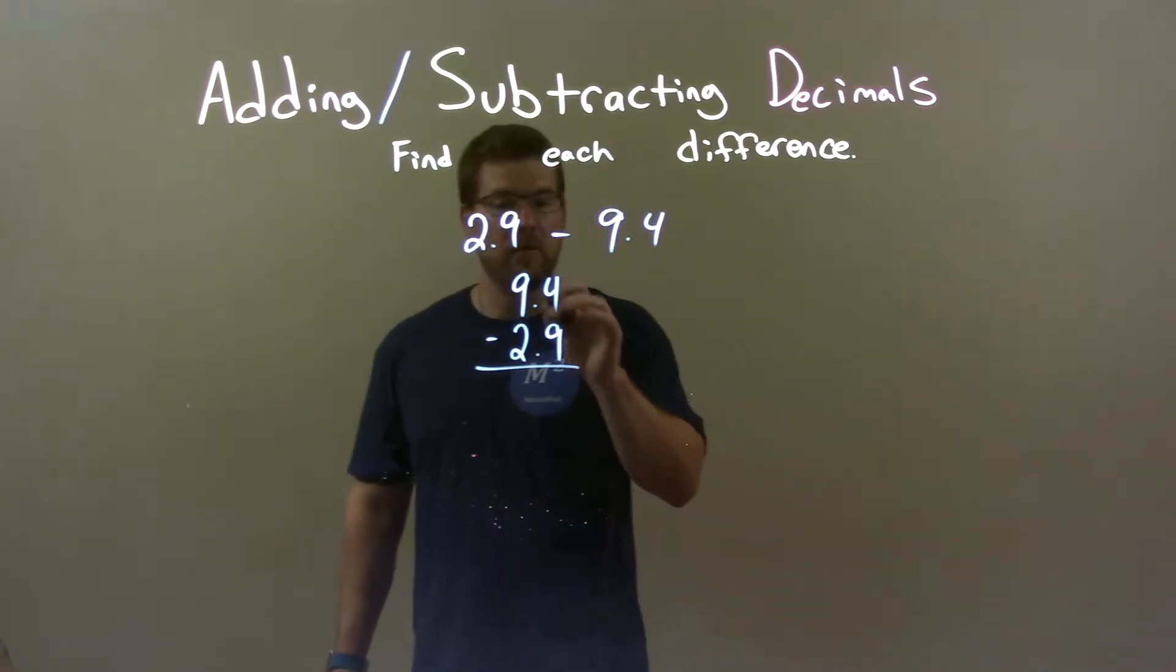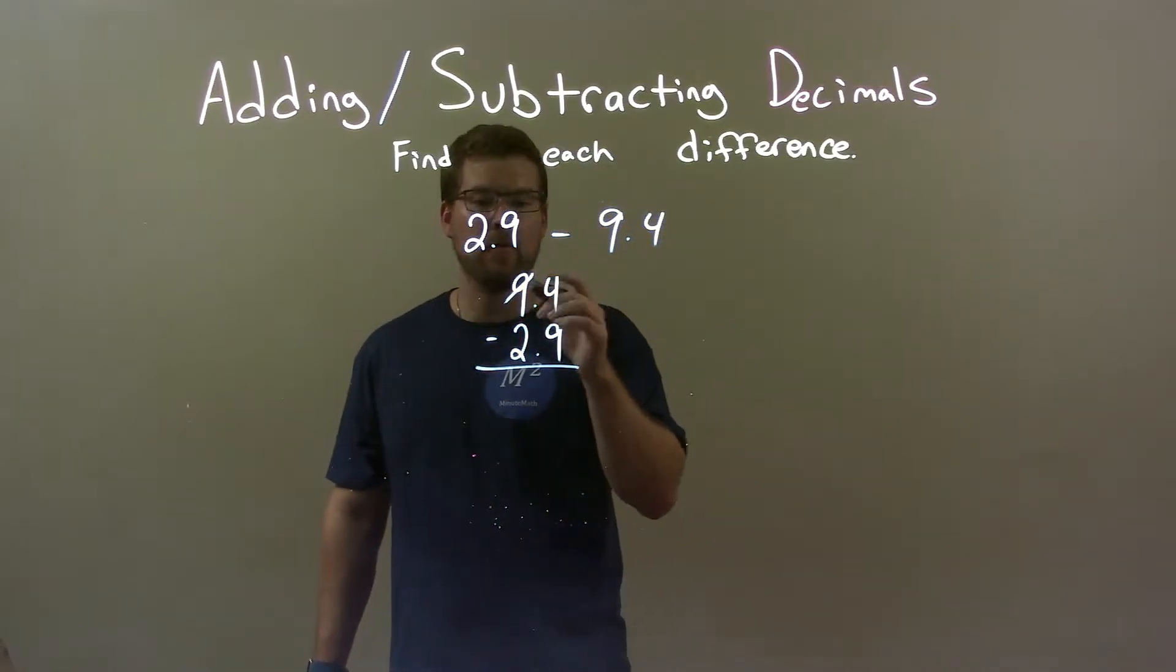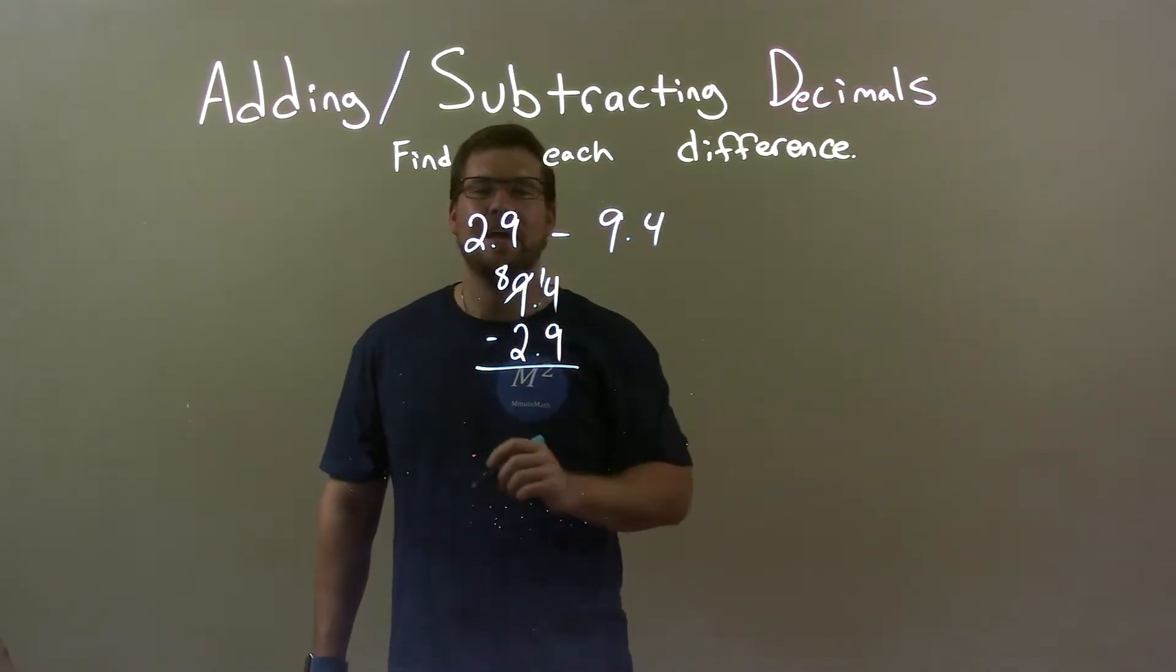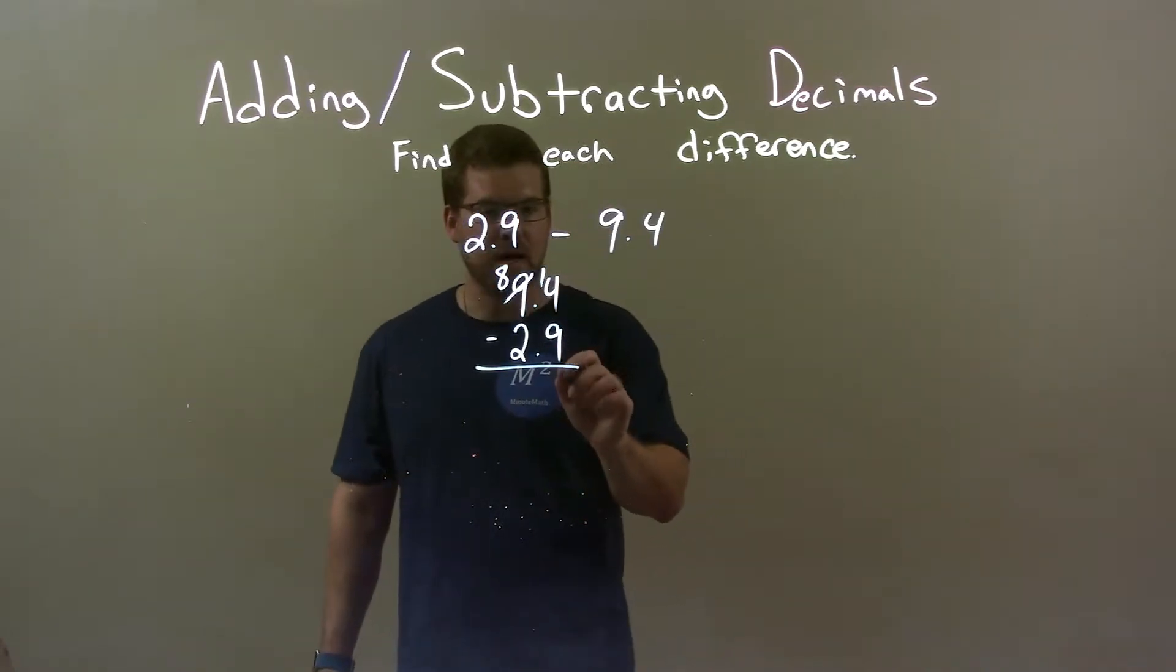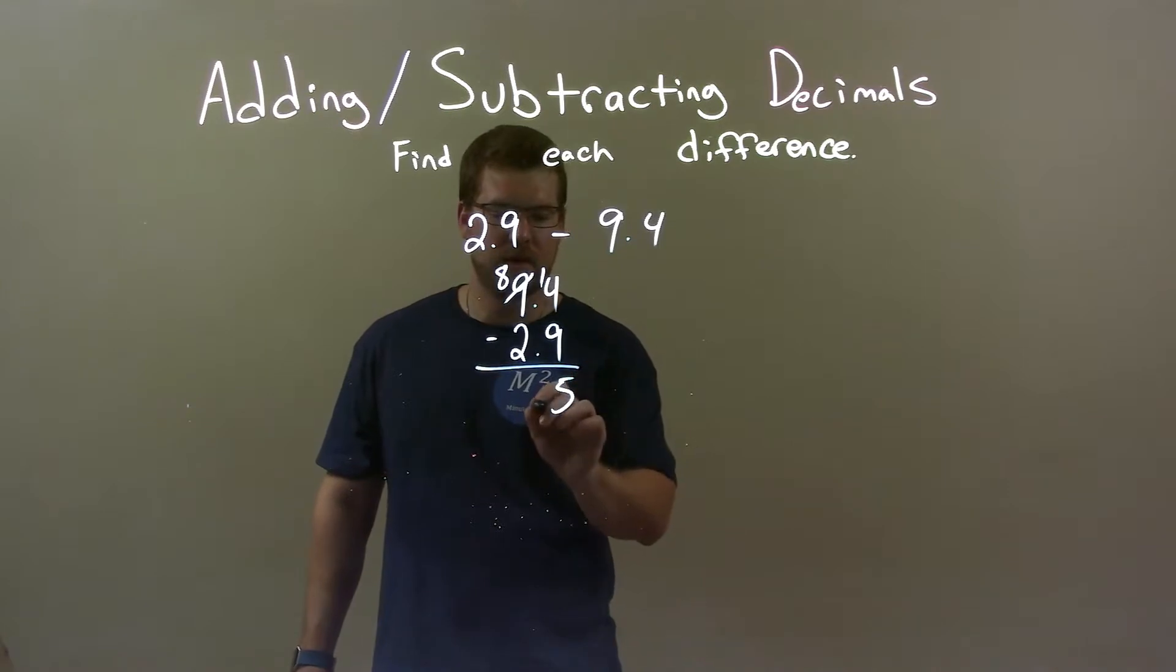4 minus 9. Well, I can't really do that. I've got to take a number from 9. 9 becomes an 8 and add a 1 there to the 4, so we have 14. So, 14 minus 9 comes out to be 5. That's when the point comes down. And we have 8 minus 2, which is 6.